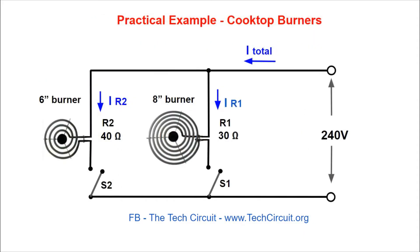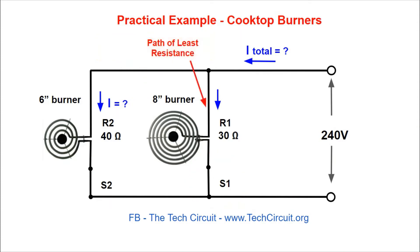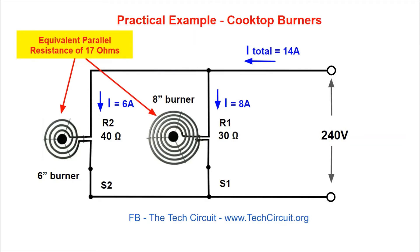What about an everyday electric cooktop? Looking at only two of the burners, you can see they are wired in parallel. If we turn the 40 ohm small burner fully on, we get six amps through the burner and six amps total through the circuit. Now let's turn the 30 ohm large burner on — it is now the path of least resistance. Does that mean the higher-value resistor, the small burner, will be ignored and just turn off? What actually happens is the small burner continues to draw six amps and the large burner now draws eight amps, increasing the total circuit current to 14 amps. That's because 240 volts is now seeing an equivalent parallel resistance of 17 ohms, and 240 volts divided by 17 ohms is 14 amps.